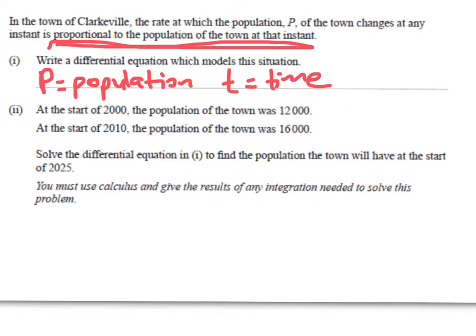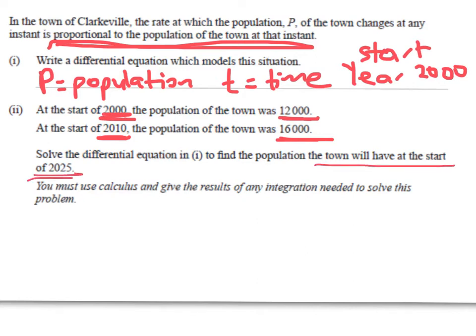At the start of 2000, the population was 12,000. And at the start of 2010, the population was up to 16,000. So we might make T, our initial time, be the year 2000, at the start of 2000. Just watch your starts and ends. And we're asked to solve the DE that we work at in part one to figure out the population that the town will have at the start of 2025. So this is a completely predictable, doable question.